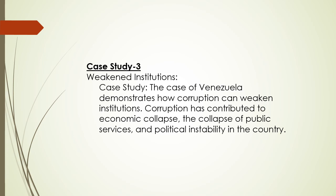Case Study 3 — Weakened Institutions. The case of Venezuela demonstrates how corruption can weaken institutions. Corruption has contributed to economic collapse, the collapse of public services, and political instability in the country.